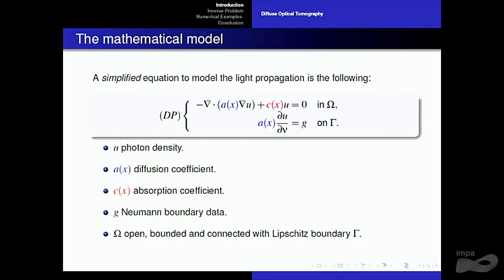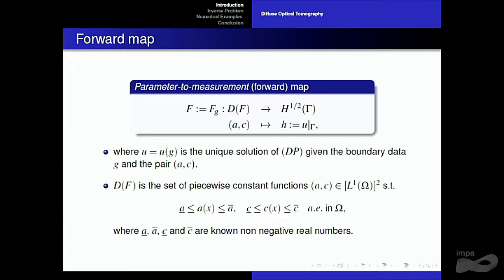Once we have this direct problem, we can define the parameter-to-measurement forward map. Given boundary data G and a pair of coefficients — a diffusion and absorption coefficient — we can calculate the solution of the boundary problem. Then we take U, the solution on the boundary, as our measurement. The domain of this forward map is the set of piecewise constant functions A, C in L1, such that A and C are bounded from below and from above, and we know these bounds.